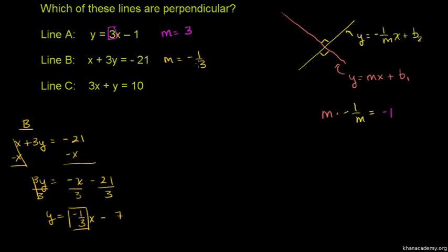This slope is minus 1 over 3. Yes, this is the negative inverse of 3. Inverse 1 over 3, negative inverse 3 is minus 1 over 3.